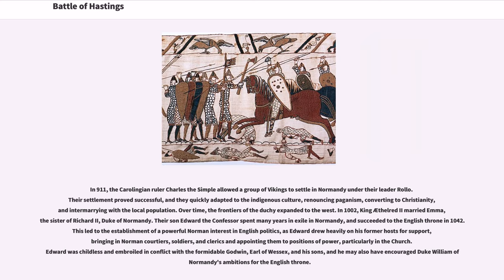In 911, the Carolingian ruler Charles the Simple allowed a group of Vikings to settle in Normandy under their leader Rolo. Their settlement proved successful, and they quickly adapted to the indigenous culture, renouncing paganism, converting to Christianity, and intermarrying with the local population. Over time, the frontiers of the duchy expanded to the west.